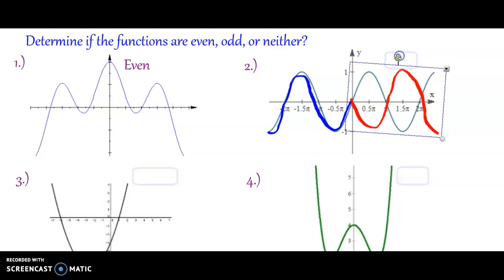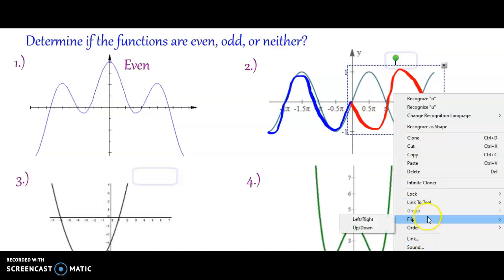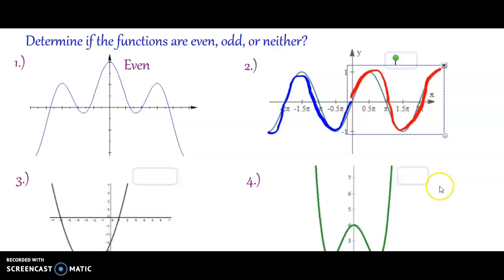So that would be like I am flipping up and down. You see we get that, so it's a reflection over the y and the x. So this is an odd function.